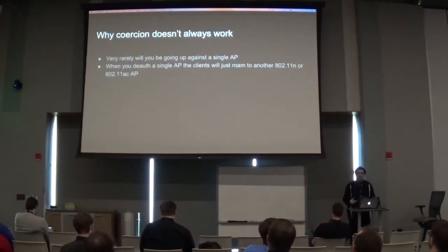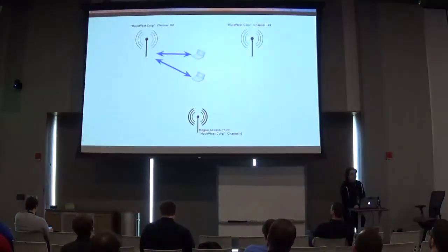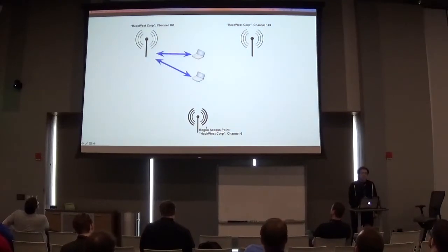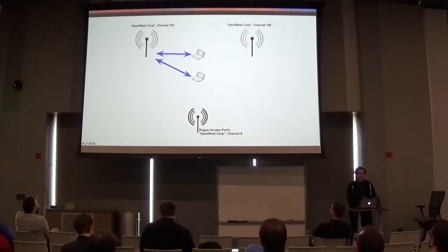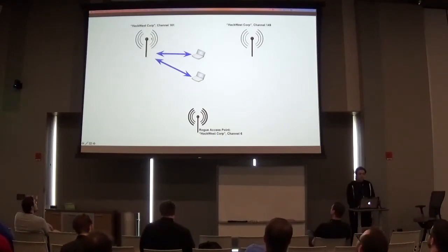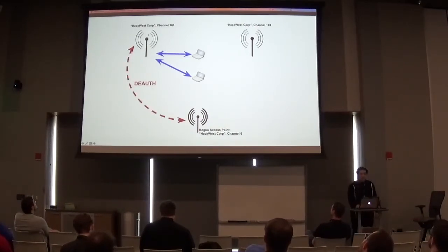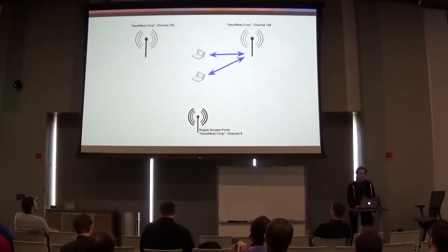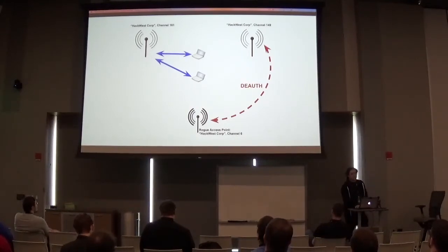You create an 802.11g access point, which is what most tools out there do, and then to get these devices to connect to you, you start spamming deauth packets. But here's the problem: you have two target access points. You spam deauth packets at one, hoping they connect to you — but instead they just roam to the other one. No big deal, spam that one too — but then they roam back to the first. You can literally sit here for hours until eventually you get lucky and one connects to you.